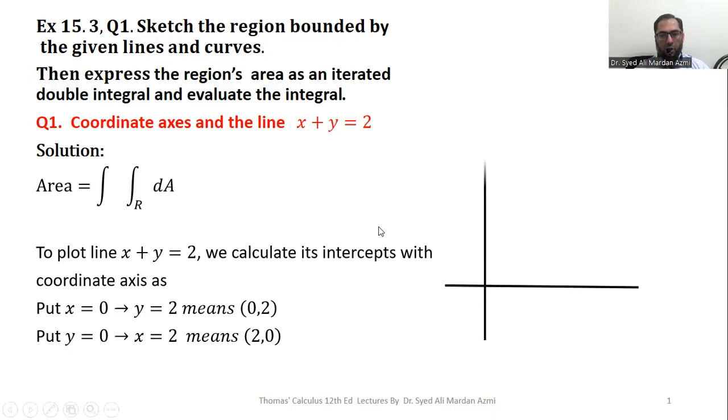In the next step we will draw our coordinate axes. Please note that in this question as coordinate axes are involved in our region boundaries, so I have made them dark instead of dotted. In the next step I will mark the points, these intercepts 2 and 2 along x-axis and y-axis. Then I will join these two points, these intercepts.